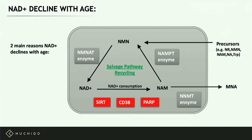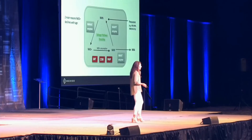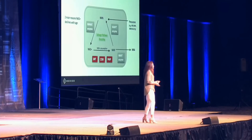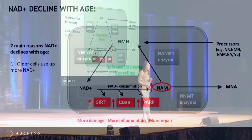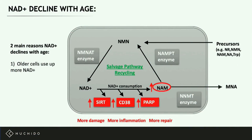So what goes wrong as we get older? There are two main reasons NAD levels decline. The first is that older cells simply use up more NAD — they have more damage, more inflammation, and need more repair, so all of those repair and maintenance pathways are switched on full and the cell is using up NAD constantly.